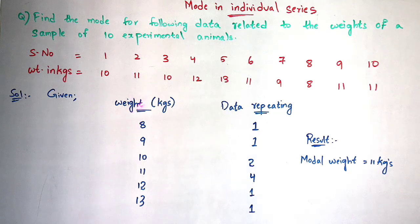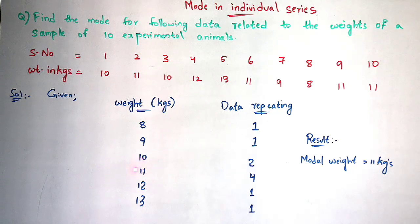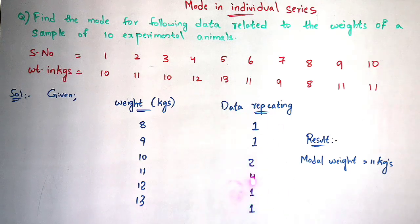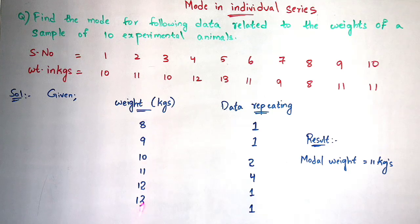Now, coming to the weights, you have to write each value only one time. You have to arrange in ascending order, that is from the lowest number to the highest number. For example, if you take 10 and 11, they have been repeated. Here 8 is the smallest number, so you write 8 as the first number in the weight column.